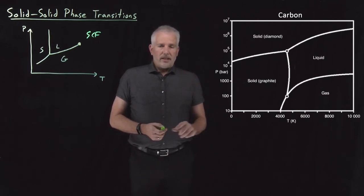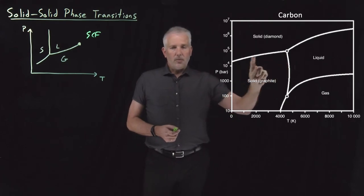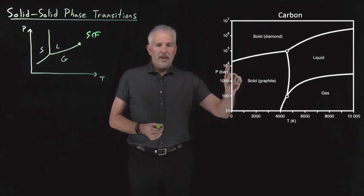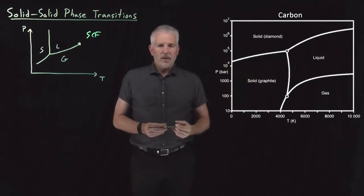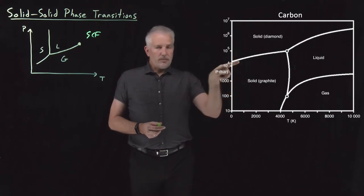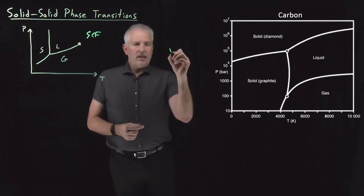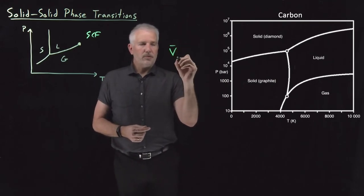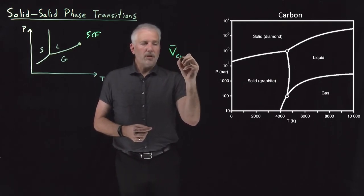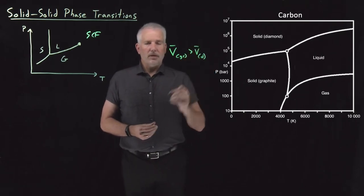Likewise, I can look at features of this phase diagram like the fact that the slopes are positive sometimes and negative in other locations. This positive slope means the fact that diamond, this phase diagram shows a positive slope on the phase coexistence curve between diamond and graphite, means that, as we've seen before, the molar volume of graphite must be bigger than the molar volume of diamond.